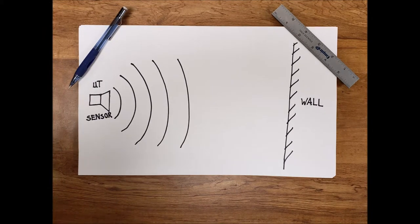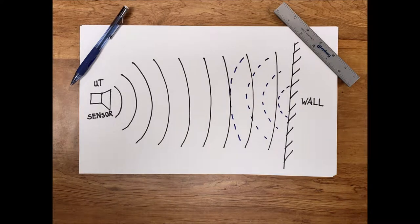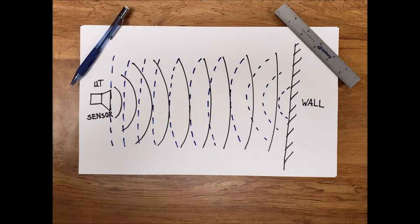So ultrasonic transducer sensor theory: wave gets sent out through the wall material, gets bounced back off the other end, and the sensor records any imperfections in the material.